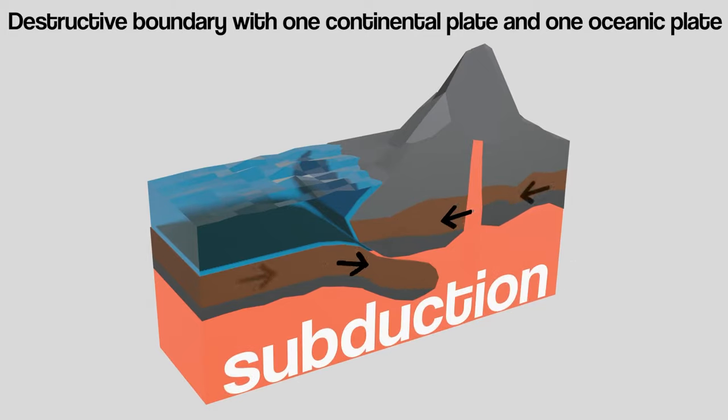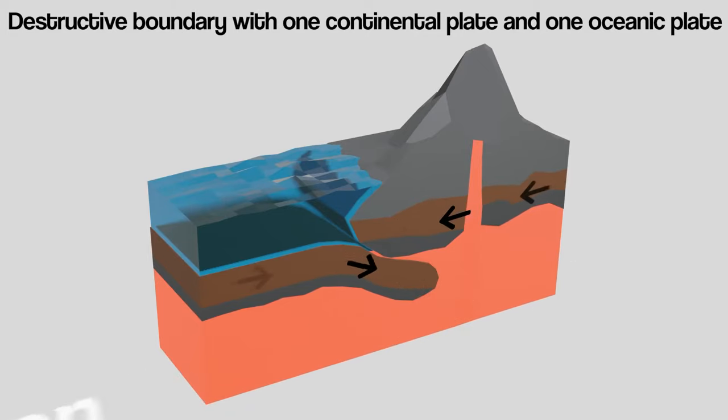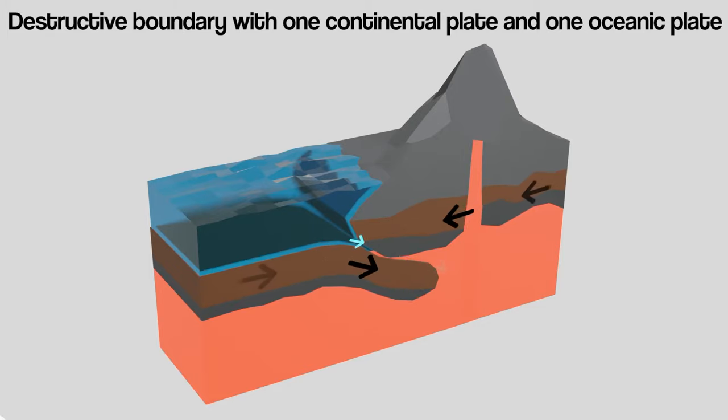As the oceanic plate sinks into the mantle, water and things like dead plankton on the seafloor are dragged down with it. These are turned into water vapor and carbon dioxide which bubble upwards and melt through the continental crust above and get trapped in the rock.